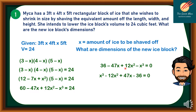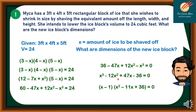We will rearrange this by multiplying both sides of the equation by negative 1, giving us x³ minus 12x² plus 47x minus 36 equals 0. We will then factor this using synthetic division — you can visit our lesson on synthetic division. We come up with the factors (x minus 1) times (x² minus 11x plus 36) equals 0.